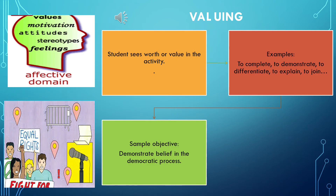An example of responding is when the student participates in class discussions or gives a presentation — in this level the student did not just listen but responds to the information received. Next is valuing — the student sees worth or value in the activity, motivated not by the teacher but by an underlying value guiding behavior. Valuing is based on the internalization of a set of specified values, ranging from simple acceptance to a more complex state of commitment. The verb examples are: to complete, to demonstrate, to differentiate, to explain, to follow, to join, and so on. An example is the student demonstrates belief in the democratic process, or shows the ability to solve problems.